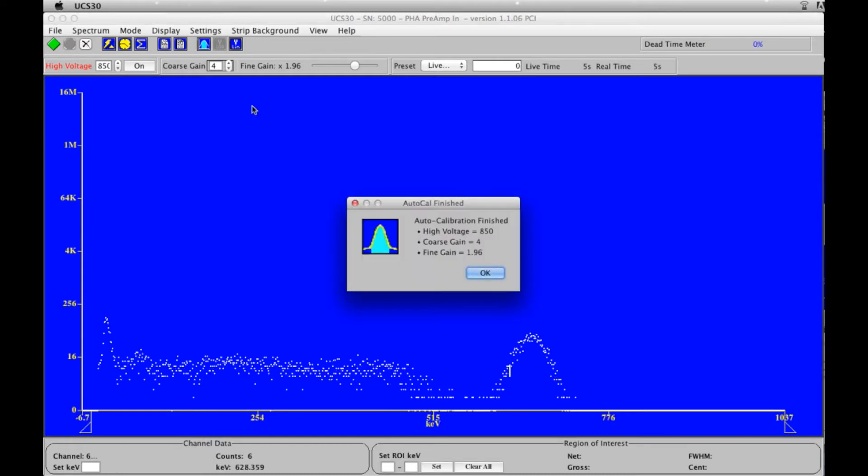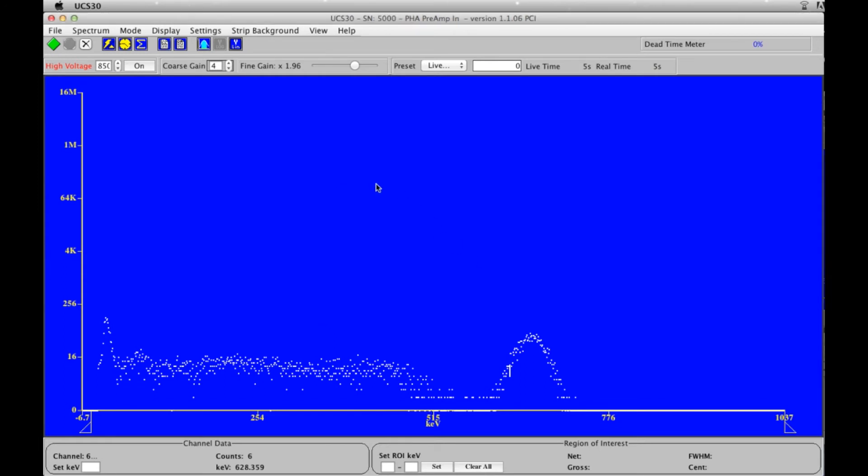We are skipping ahead because this does take a few minutes. The high voltage was estimated at 850 volts, and the coarse gain and fine gain is as follows. Press OK, and we will erase from the display.